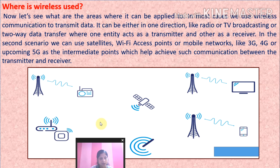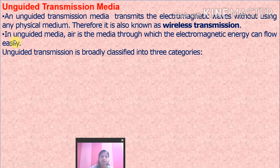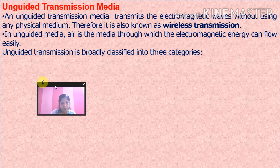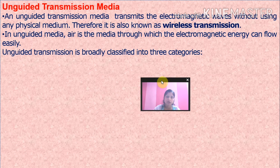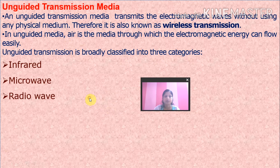Unguided transmission media transmits electromagnetic waves without using any physical medium, unlike guided media. It is also known as wireless transmission media. In unguided media, air is the medium through which electromagnetic energy flows. Unguided transmission is broadly classified into three categories: infrared, microwave, and radio wave.